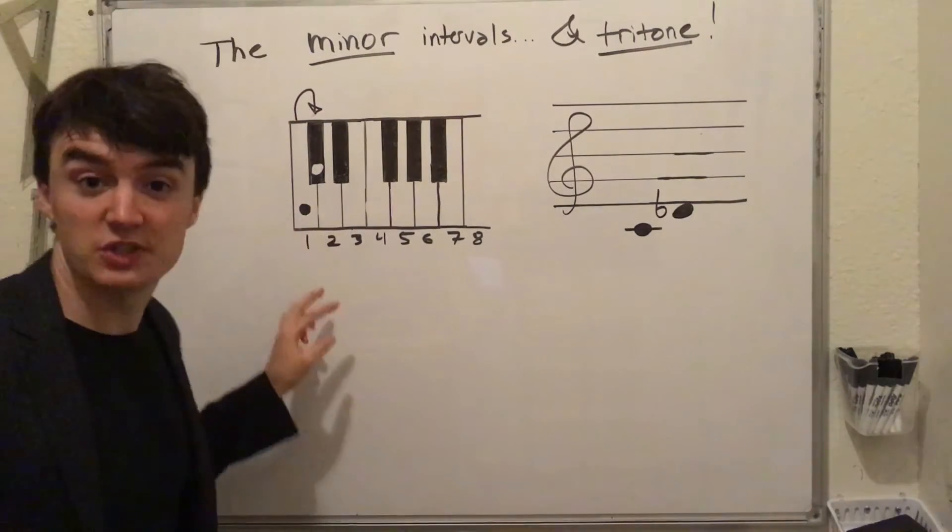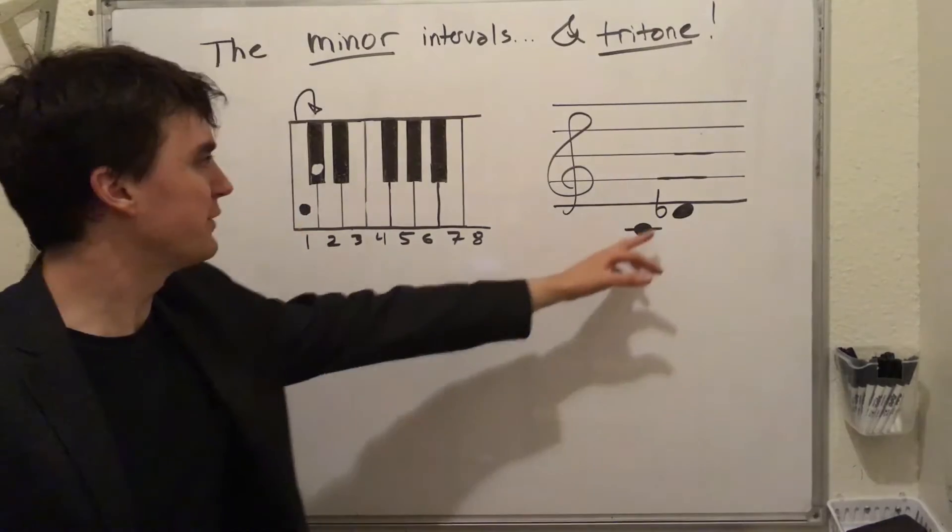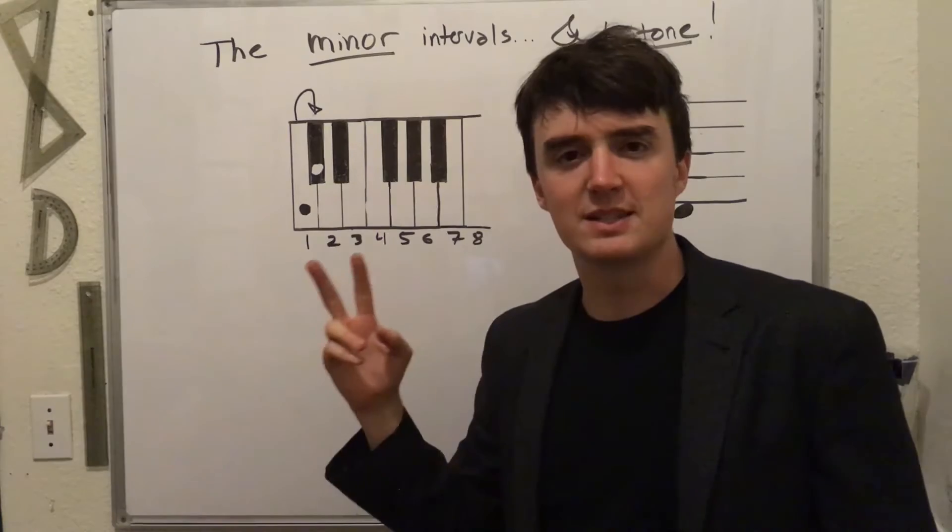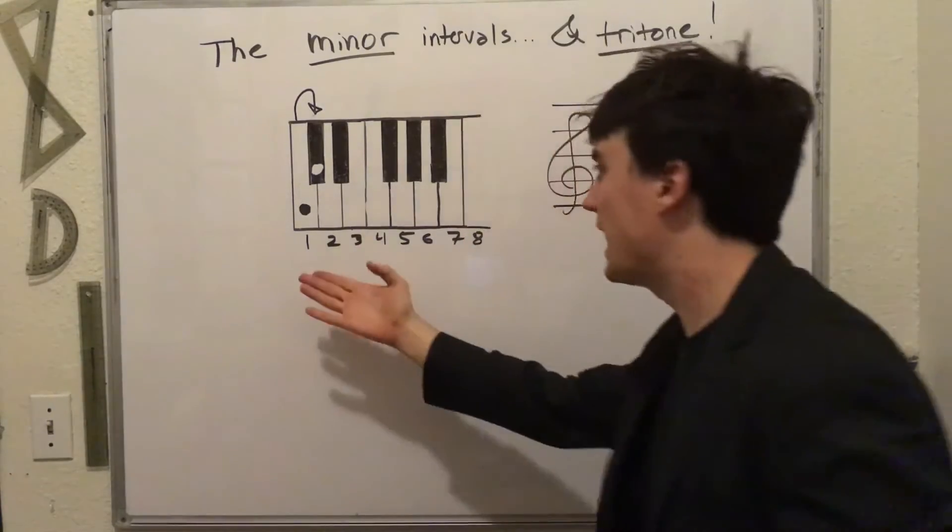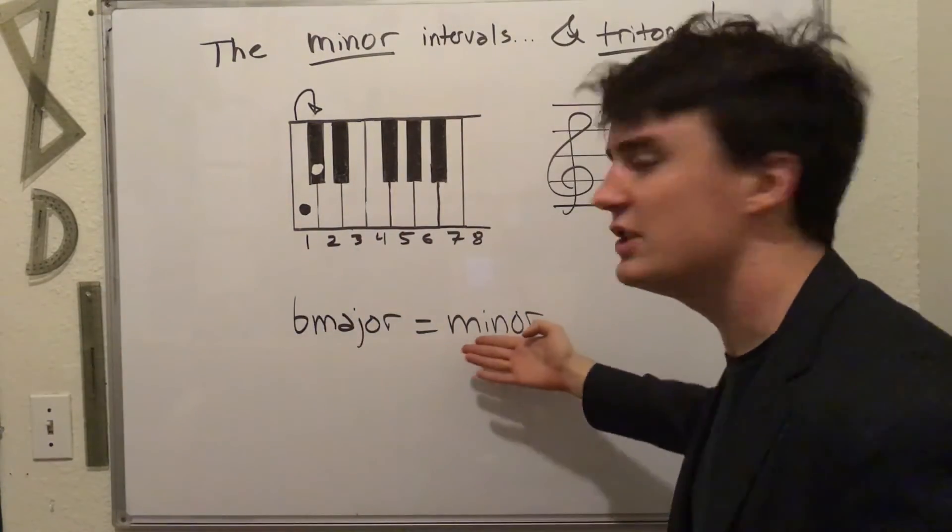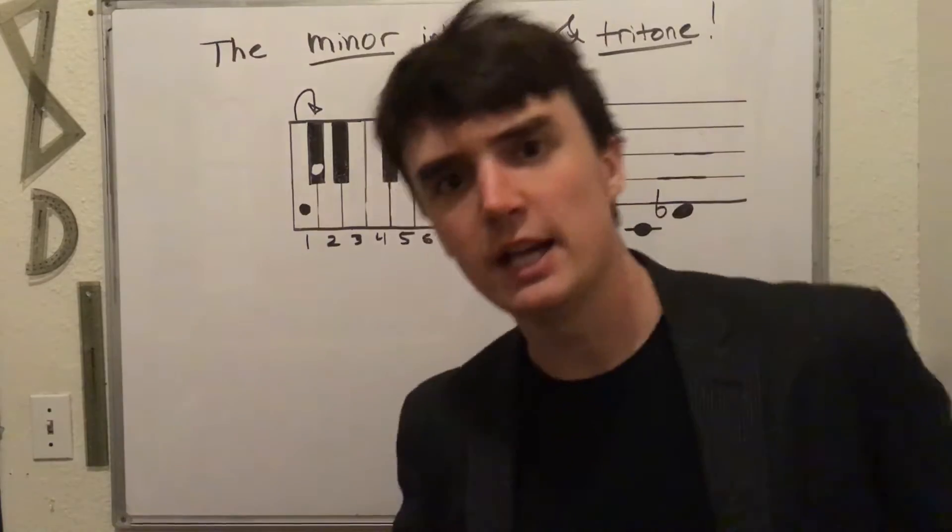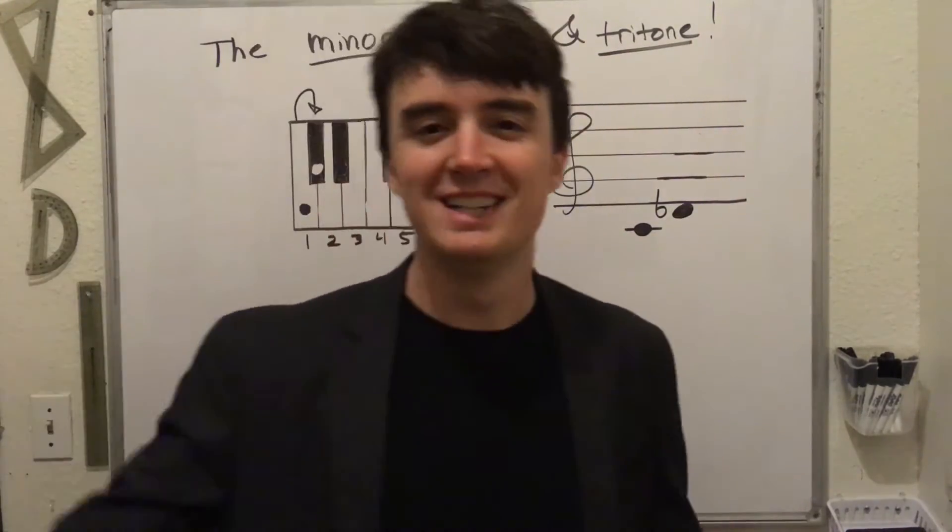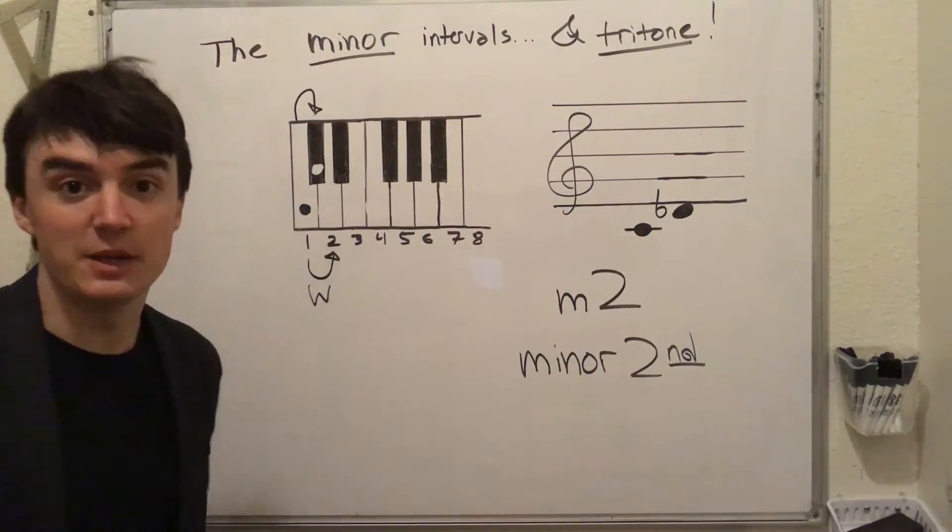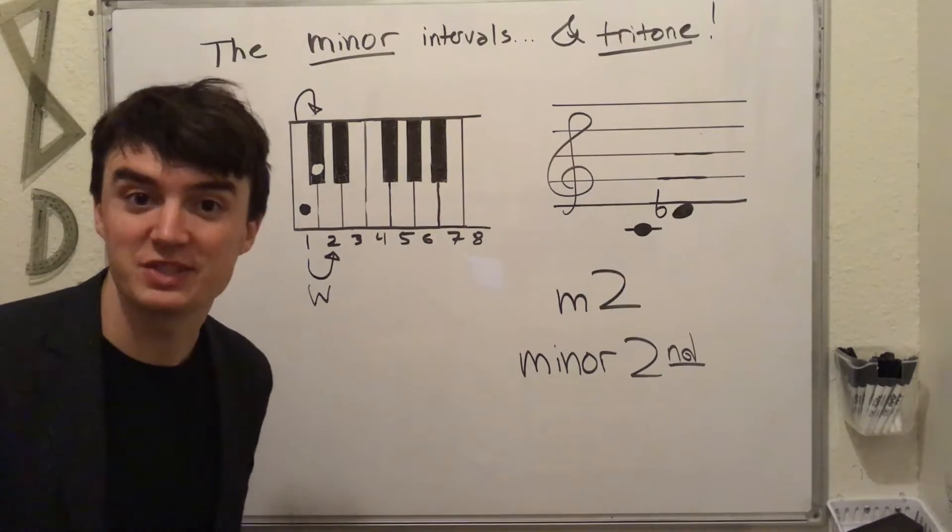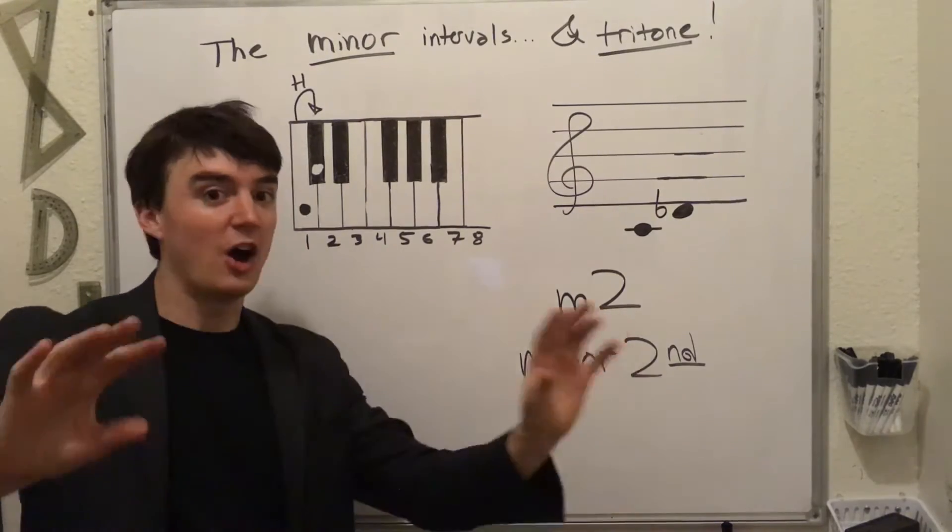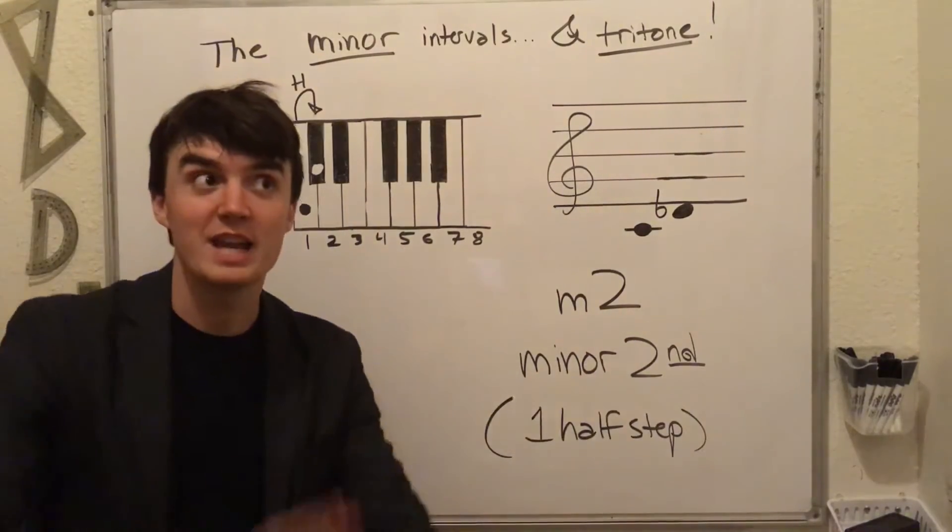So we're in a major scale and we start with one and move to a flat two, and the flat makes it fall one half step lower. A normal two is major. The flat version is minor. Flatting a major makes it a minor. Putting a flat makes it into a minor interval. So now that you know that, what is it? Sorry, what? Oh, it's a video. You can't talk to me. It's a minor second, lowercase m two. One to two in a major scale is normally a whole step, but with the flat there, now we go back one half step. So how many half steps are we away from the tonic? One half step.